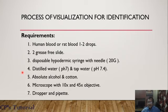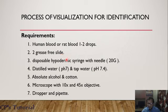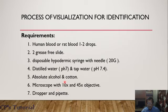Now the process of visualization and identification of the blood smear will be discussed. Other than the Leishman stain, the materials required include human blood as sample, three grease-free slides, two disposable hypodermic syringes, distilled water of different pH, absolute alcohol, cotton, a microscope with two objectives of 10x and 45x, and a dropper pipette. This requirement is enough to conduct the experiment.